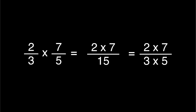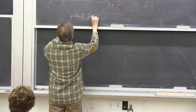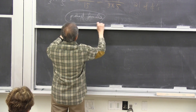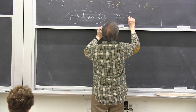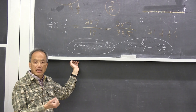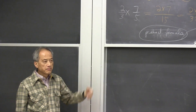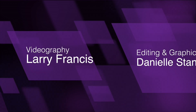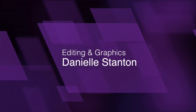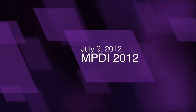This is the so-called product rule — the most basic part: M over N times K over L equals MK over NL. That's the only good thing about fractions — meaning that multiplication is the easiest to learn.